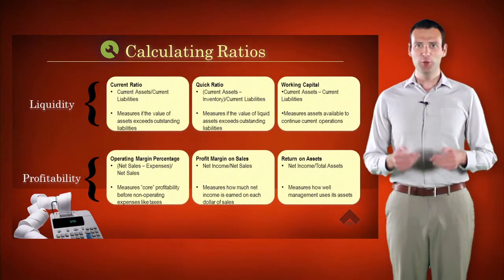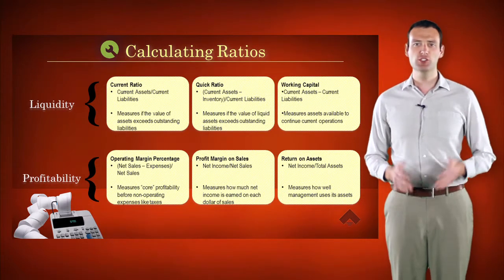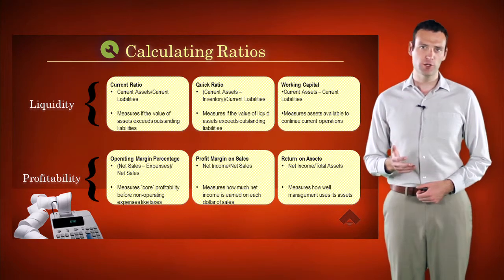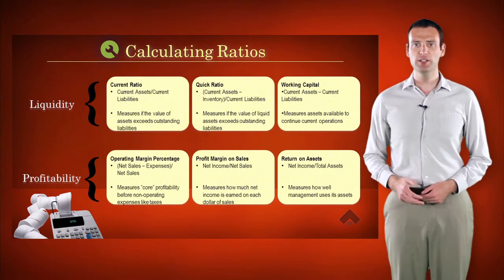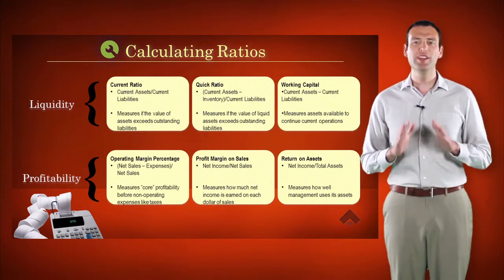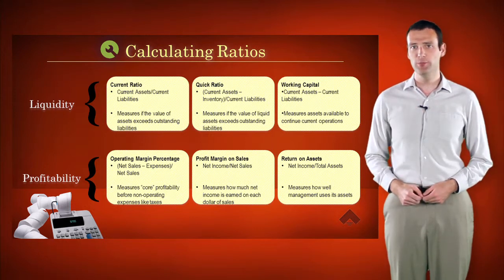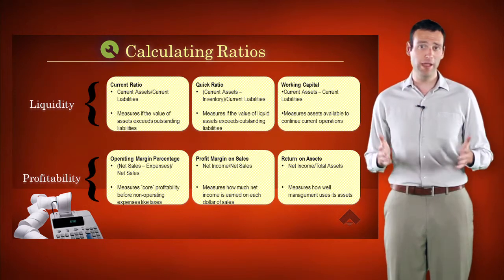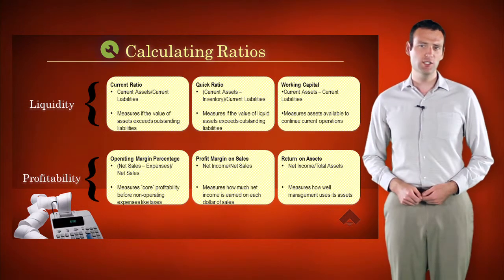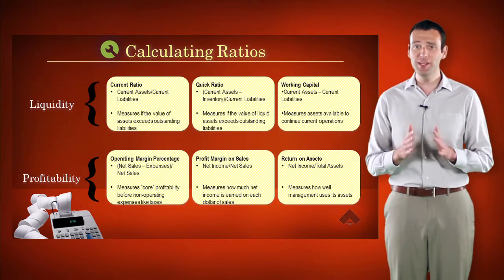Liquidity and profitability are the two other ratios that matter to us. We'll start by looking at three liquidity ratios. First, current ratio, which is calculated by dividing current assets by current liabilities. We definitely want this number to be greater than one, because current liabilities must be satisfied or paid from current assets. A current ratio of less than one means there are not enough assets available to pay immediate bills.